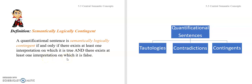Unlike in the cases of tautologies and contradictions — semantic logical truths and semantic logical falsehoods — where you only have to provide one interpretation to prove it's not semantically logically true, or one interpretation to prove it's not semantically logically false, here, to prove that a sentence is semantically logically contingent, you have to provide two interpretations: one where the sentence is true, and another where it's false.